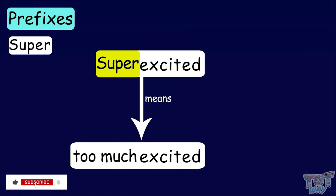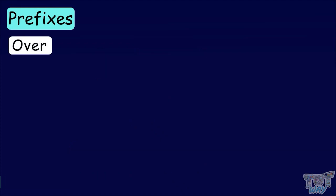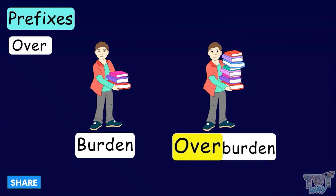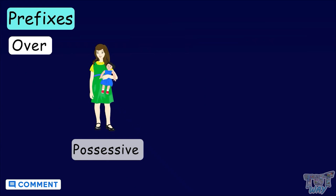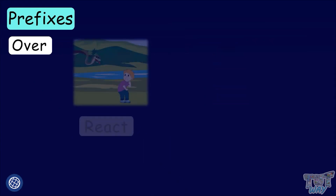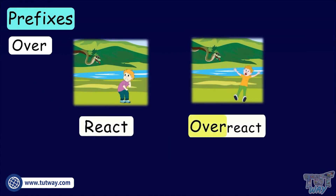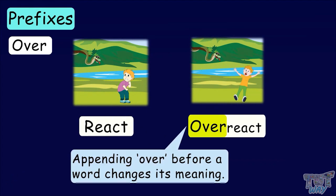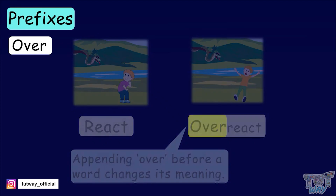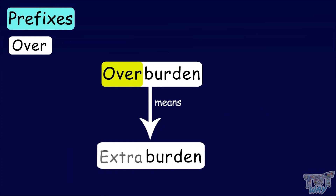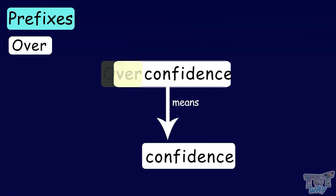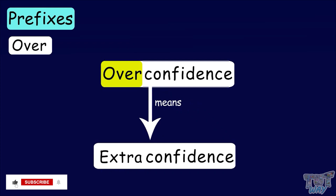Now let's have some more examples of over. Over: burden, overburden. Confidence, overconfidence. Possessive, overpossessive. React, overreact. Appending over before a word changes its meaning. Overburden means extra burden or more than required burden. Overconfidence is more than required confidence.